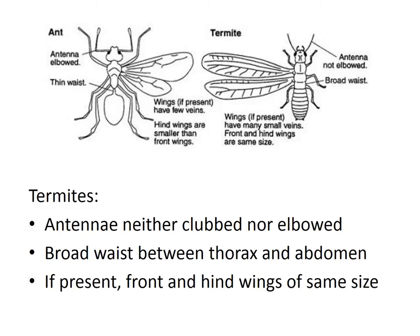The fact that they do look rather ant-like often leads to confusion between these two groups. So here are a couple of ways you can separate ants from termites. Termites do not have clubbed or elbowed antennae — ants have at least elbowed antennae, often clubbed. Termites have a broad waist between the thorax and the abdomen, whereas ants have a very thin or narrowed waist. And if wings are present in termites, the front and hind wings are of the same size, whereas in ants, the front wings are larger than the hind wings.